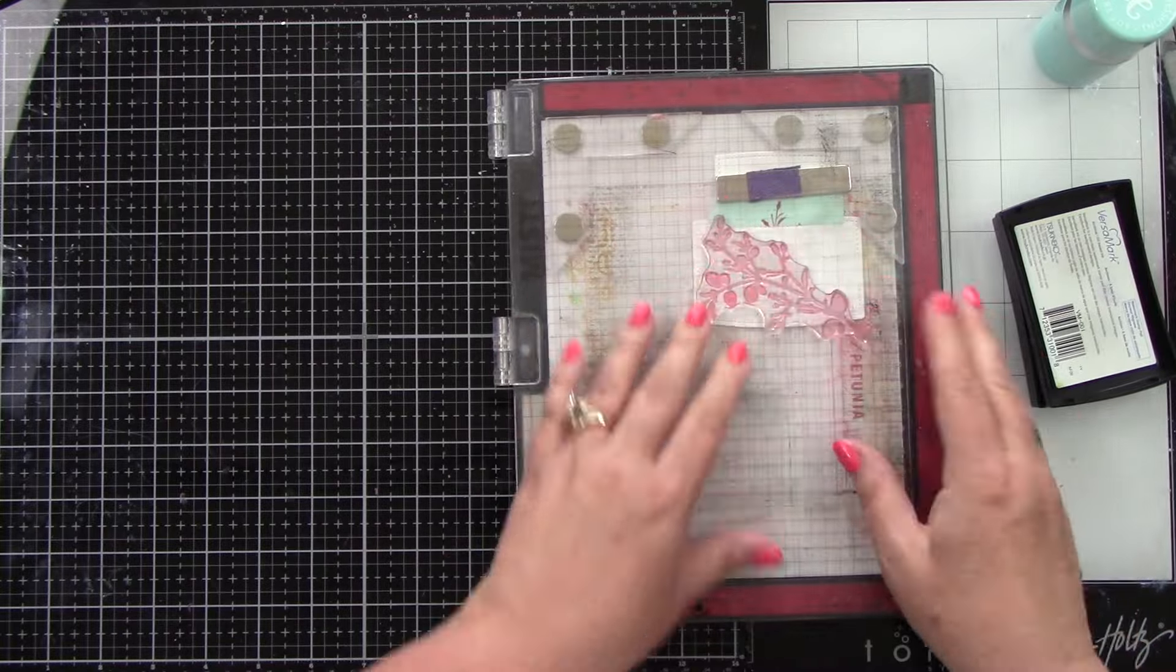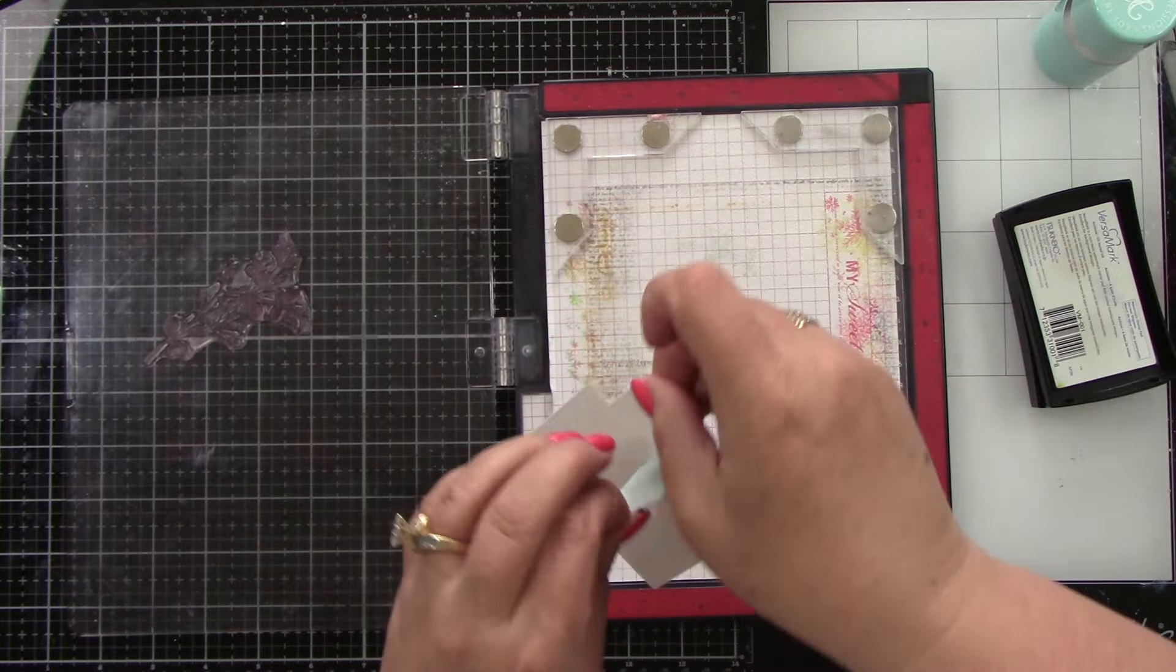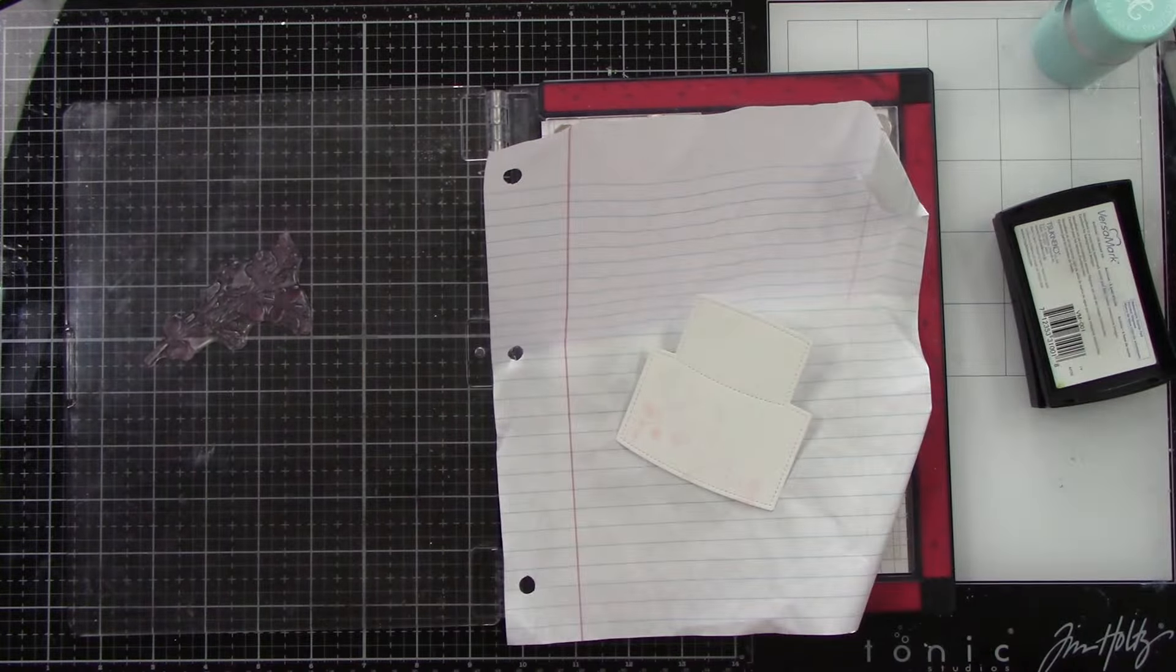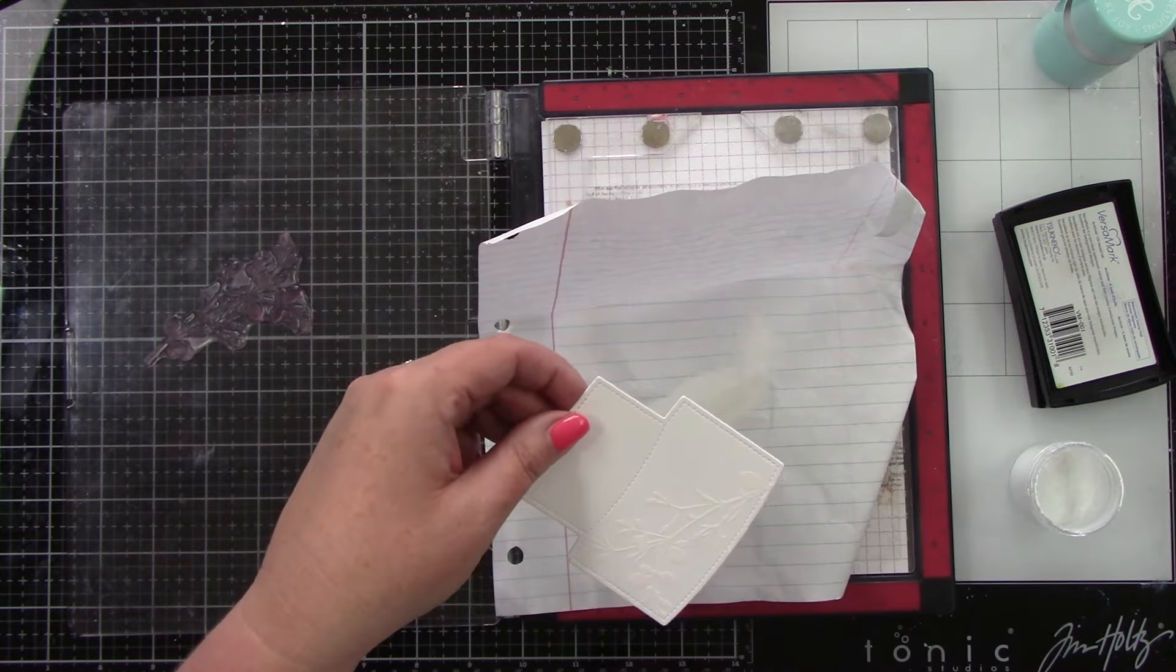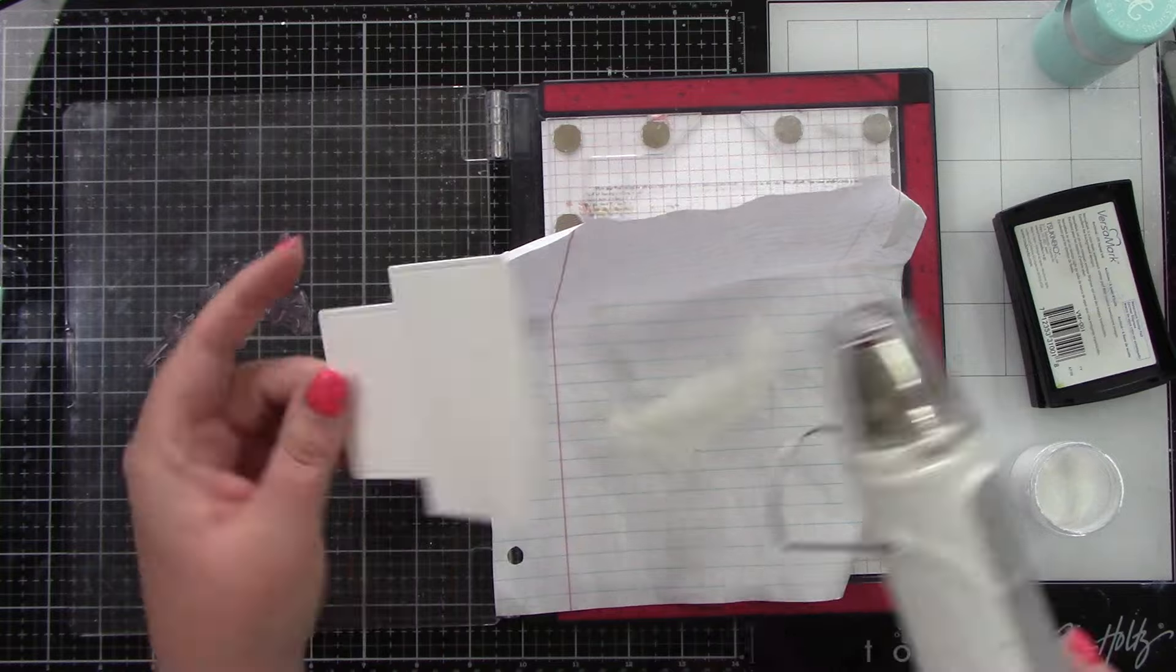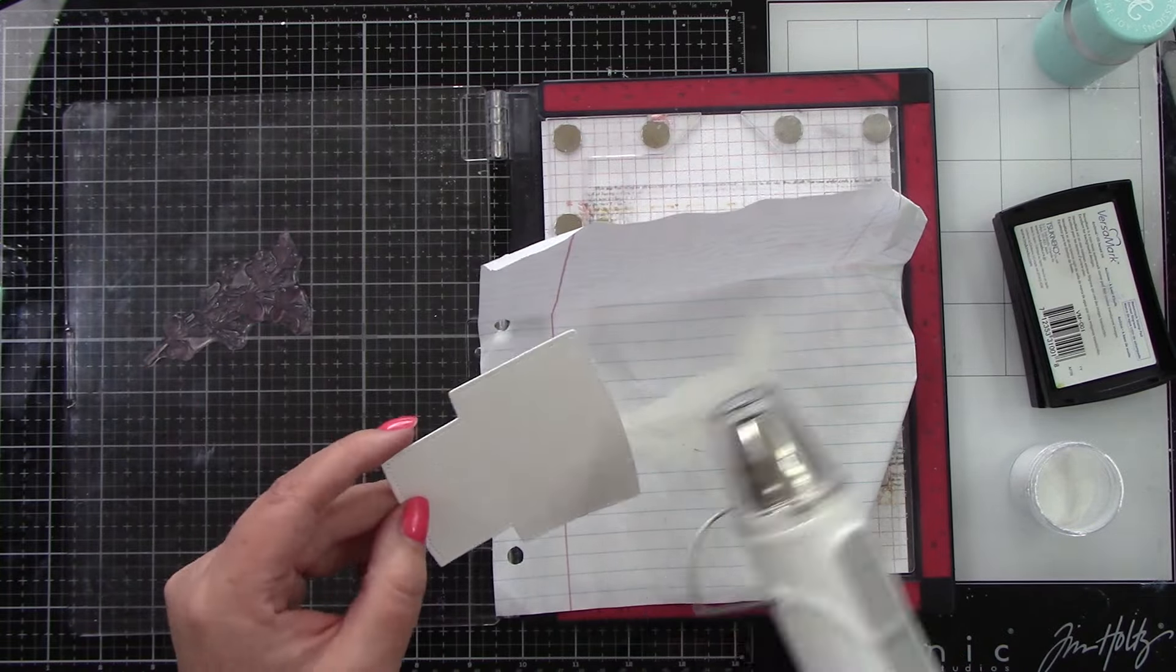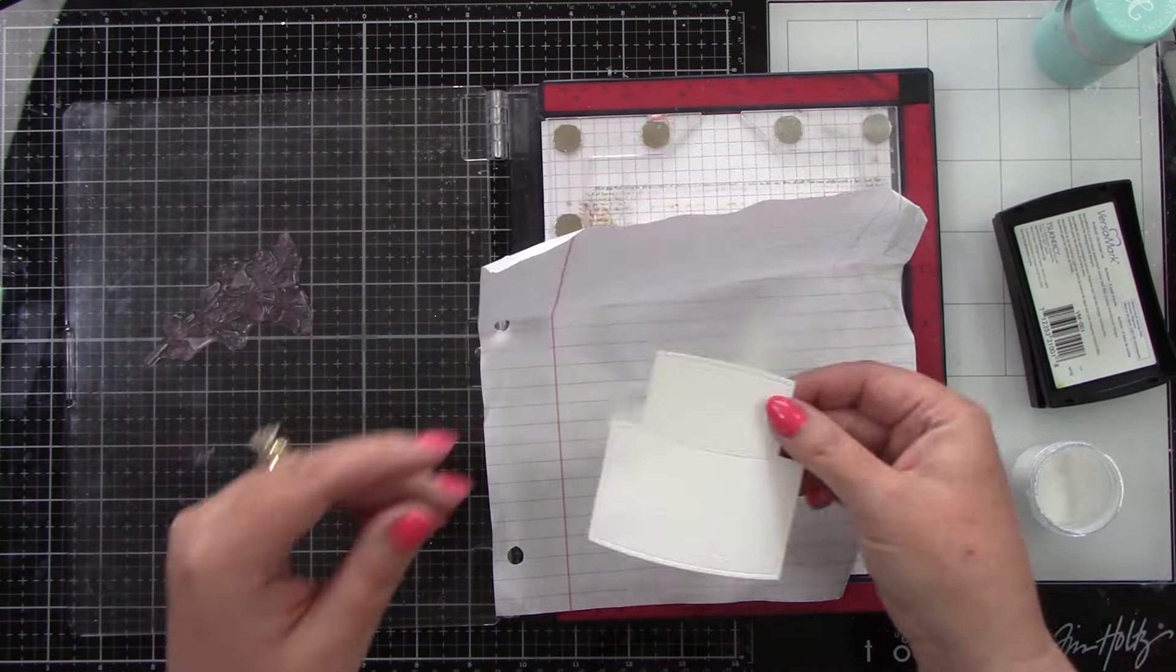We're going to do an emboss resist technique on this cake, and so that's why I'm using the white embossing powder because when we do a little bit of ink blending, it's going to resist that and then we will see the white. So I sprinkled on my white embossing powder. I'm heating that with my heat tool.